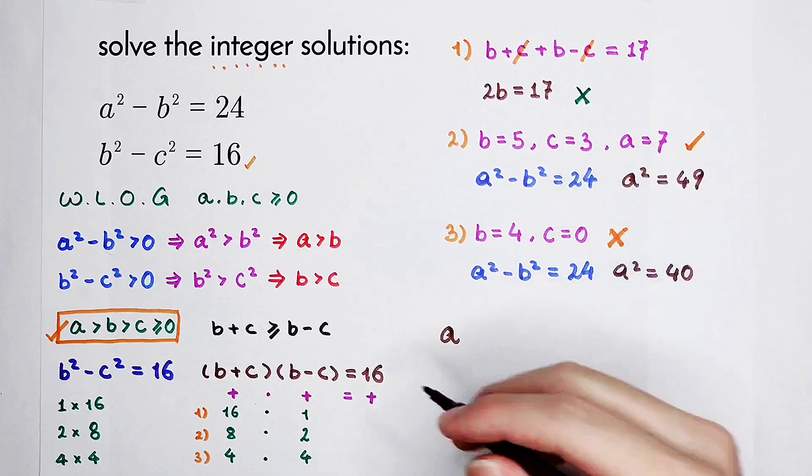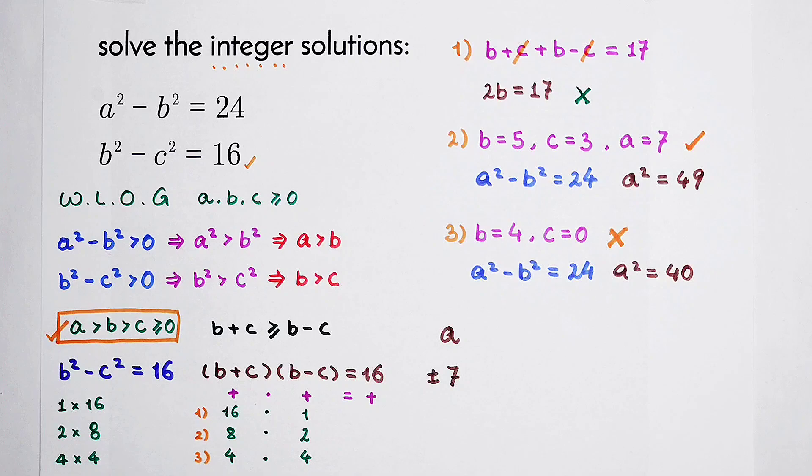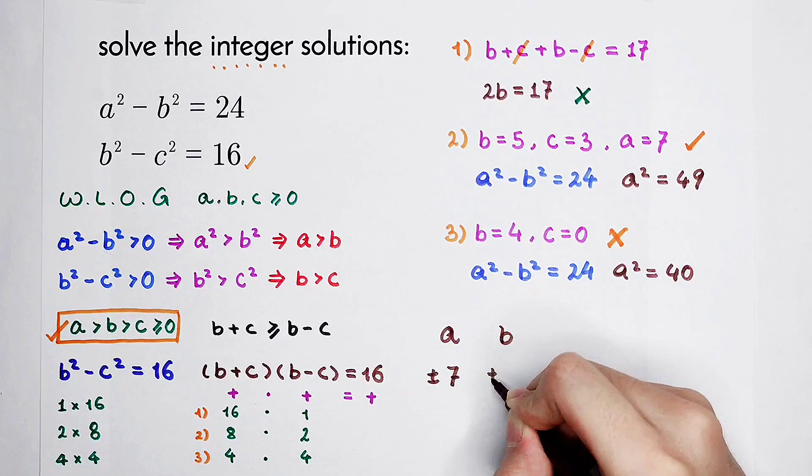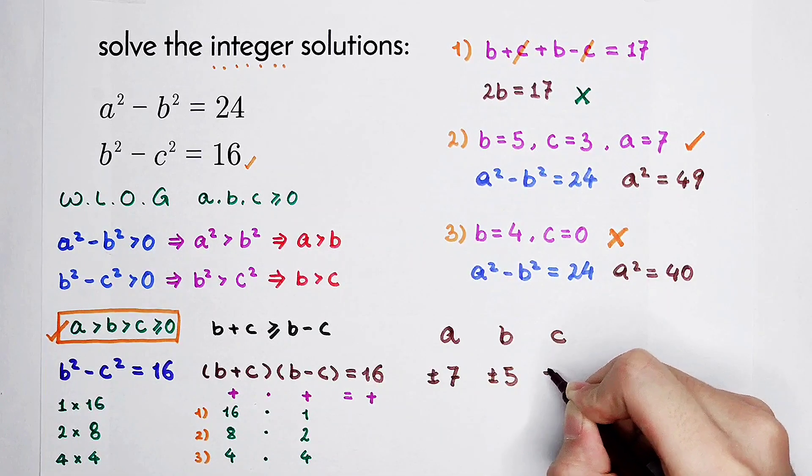For example, a equals 7 can also be negative 7. So it is positive or negative 7. And for b, positive or negative 5. And for c, positive or negative 3.